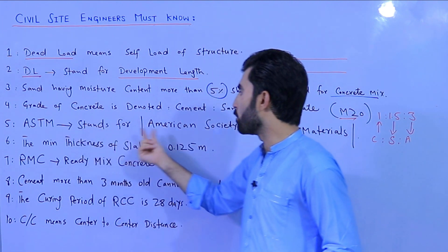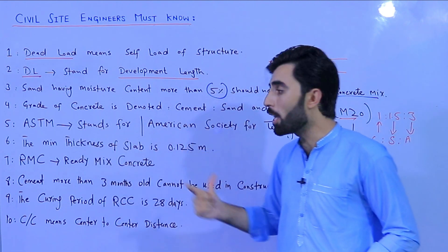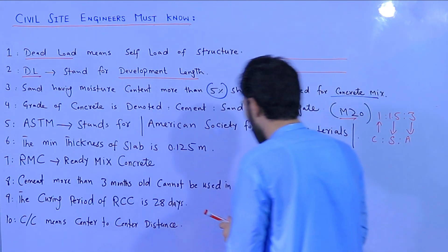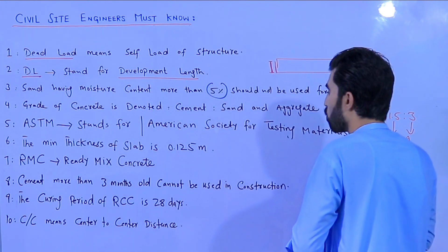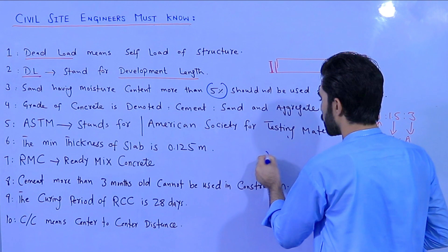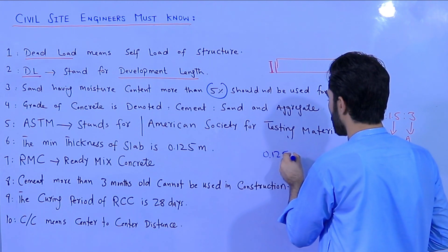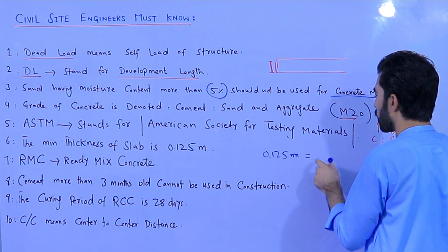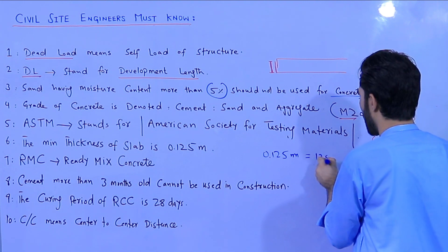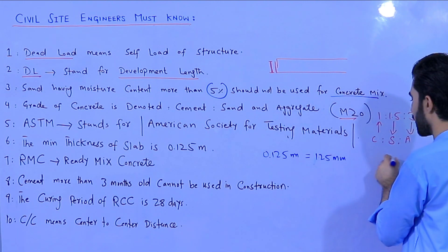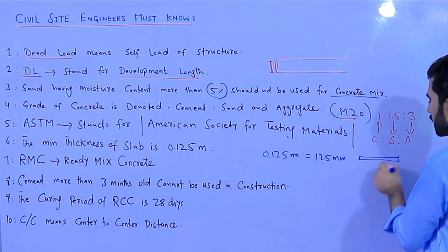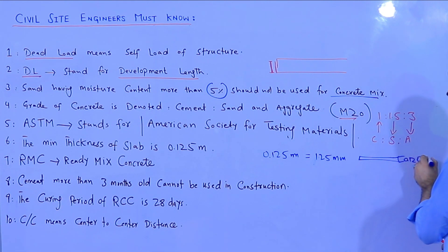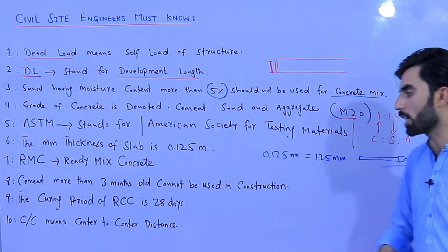The sixth point: the minimum thickness of a slab should not be less than 0.125 meters, or 125 mm. This is the minimum allowable slab thickness in construction.